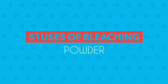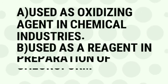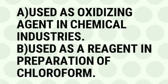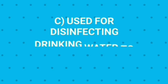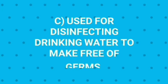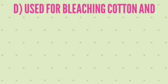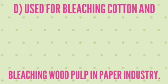Uses of bleaching powder: used as an oxidizing agent in chemical industries; used as a reagent in the preparation of chloroform; used for disinfecting drinking water to make it free of germs; and used for bleaching cotton and wood pulp in the paper industry.